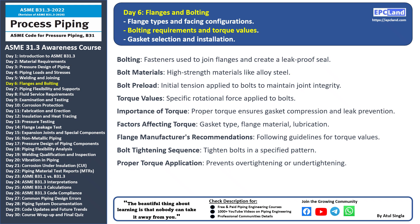Proper torque application: applying the right amount of torque is essential to avoid both over-tightening, which can damage components, and under-tightening, which can lead to leaks. By understanding bolting requirements and torque values, engineers can create reliable and leak-free flanged connections in piping systems. That concludes today's video. In our next topic we'll explore gasket selection and installation, so stay tuned and keep learning.